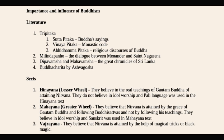The important Buddhist literature includes the Tripitaka, which has three Pitakas: Sutta Pitaka carries Buddha's sayings, Vinaya Pitaka carries the monastic code, and Abhidhamma Pitaka contains the religious discourses of Buddha.